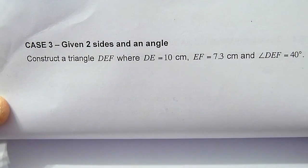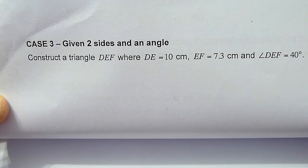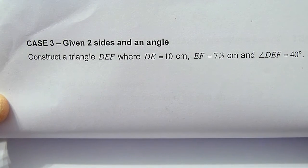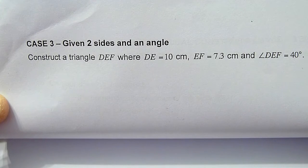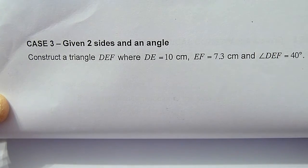We are going to construct a triangle when given two sides and an angle, such that DE is equal to 10 cm, EF equal to 7.3 cm, and angle DEF equal to 40 degrees.